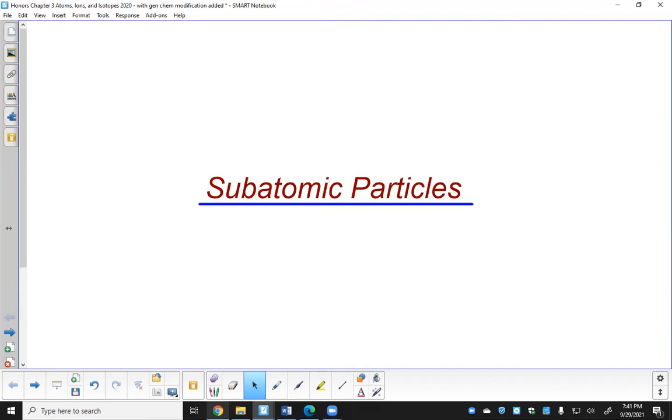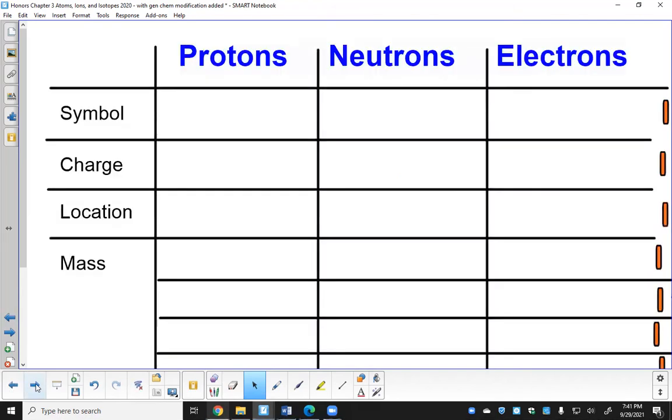Taking a look at subatomic particles, there are three well-known subatomic particles: protons, neutrons, and electrons. We've already talked a little bit about how they were discovered. We know that J.J. Thomson, for example, discovered electrons in 1897.